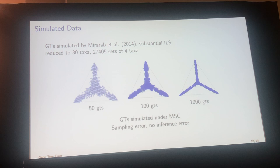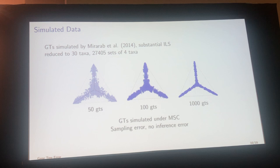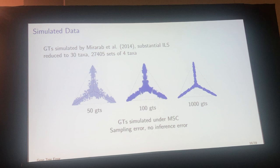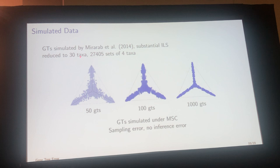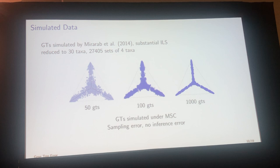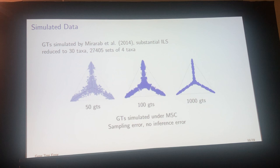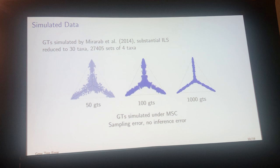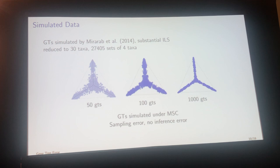Let me show this with some simulated data. This is from Mirov and Morneau, simulated for testing ASTRAL, based on an avian species tree with substantial ILS, reduced to 30 taxa. There are 27,405 sets of four taxa, so each plot contains 27,405 points. With 50 gene trees you see a broad cloud; with 100 gene trees it tightens; with 1,000 gene trees it squeezes down onto the three lines. These gene trees were simulated under the multispecies coalescent, so all you're seeing is sampling error from the finite number of gene trees.